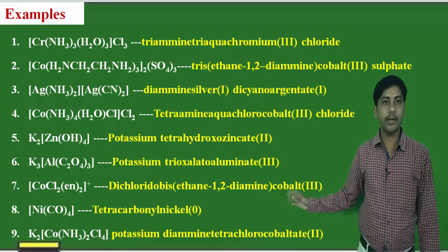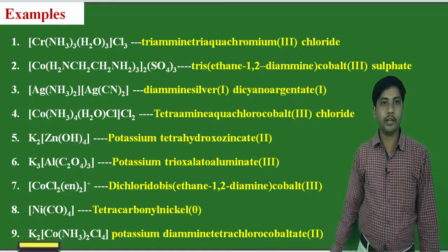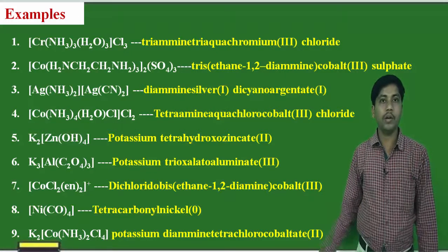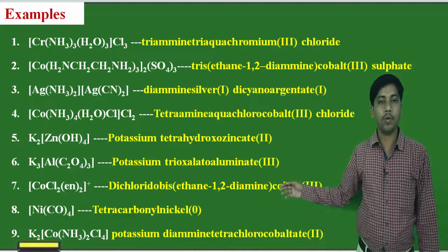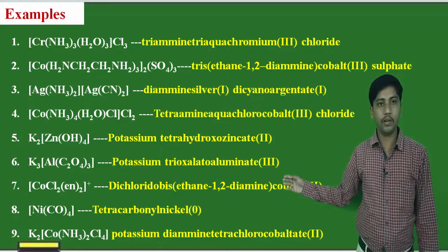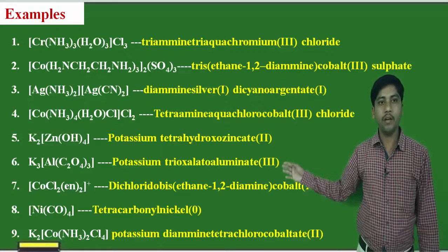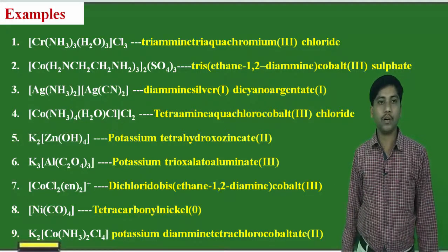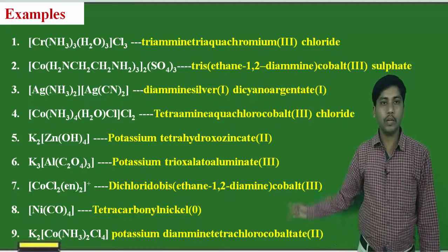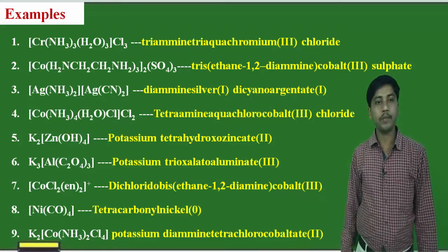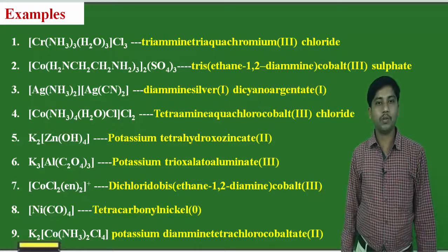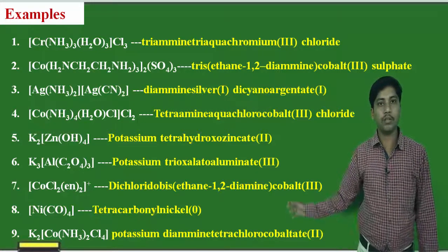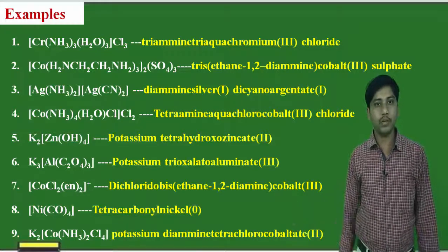Additional examples include tris(ethane-1,2-diamine)cobalt(III) sulfate and chromium(III) chloride. All these examples of coordination compounds are for your study. You can see all the examples and learn how to apply IUPAC names to coordination compounds. Thank you friends for watching the video.